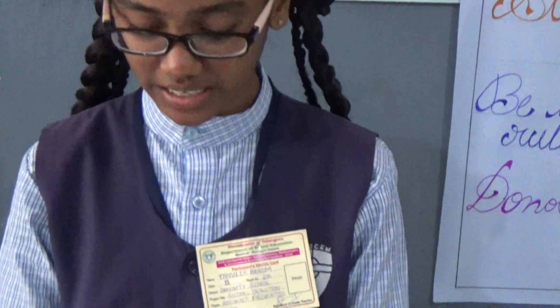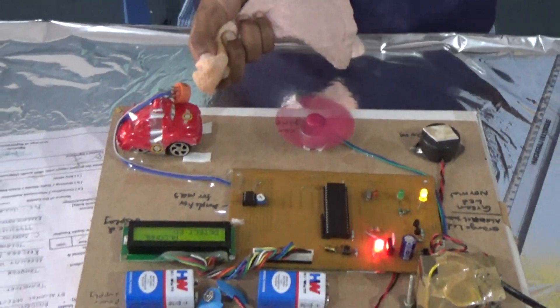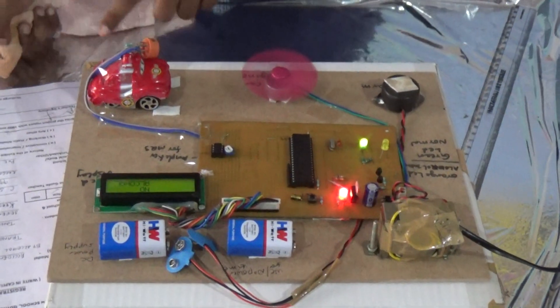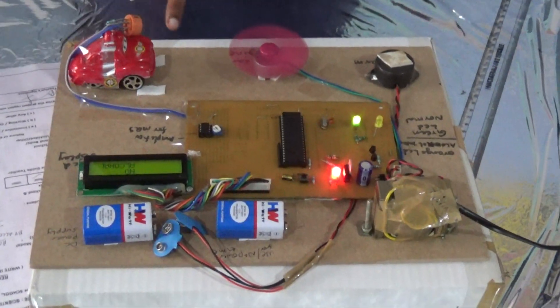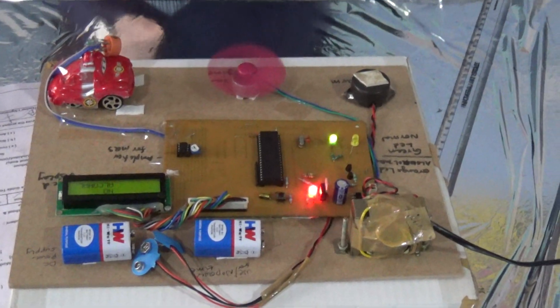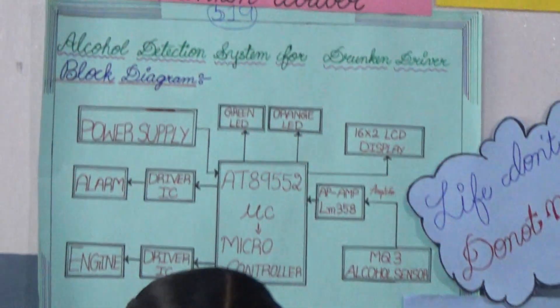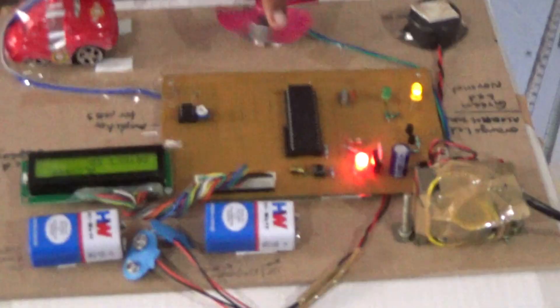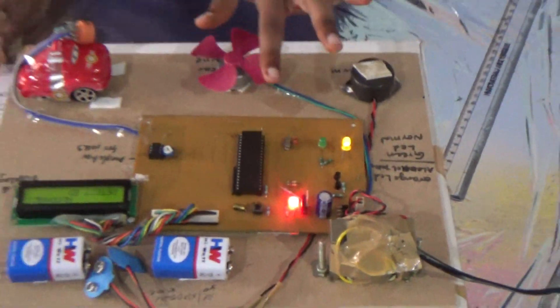We have this MQ-3 alcohol sensor. This is an MQ-3 alcohol sensor. If a person has consumed alcohol and comes near the sensor, this MQ-3 alcohol sensor will detect that and pass the information to this IC. This IC contains a C language program.